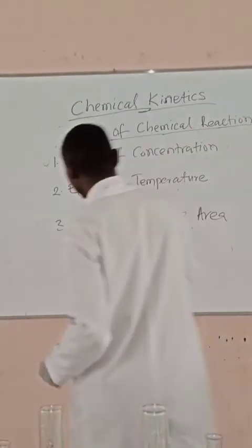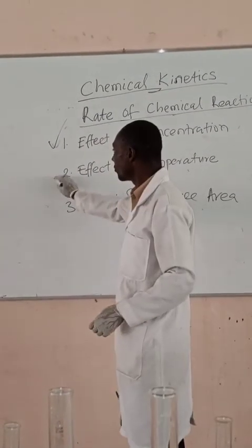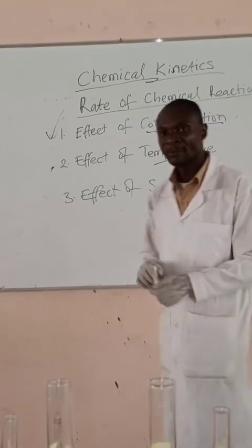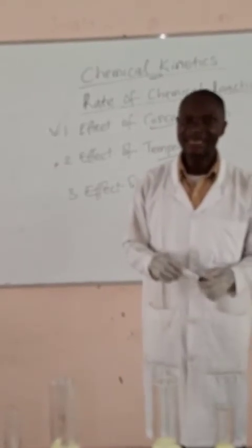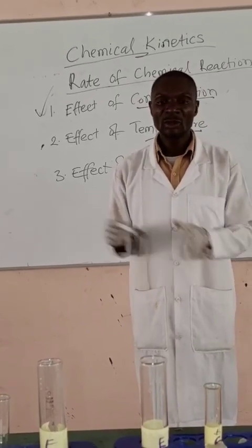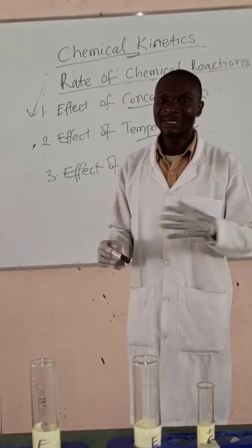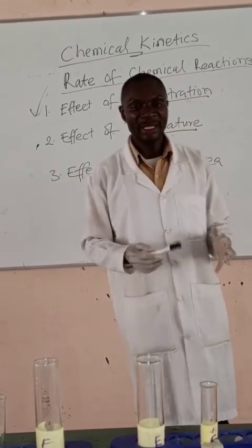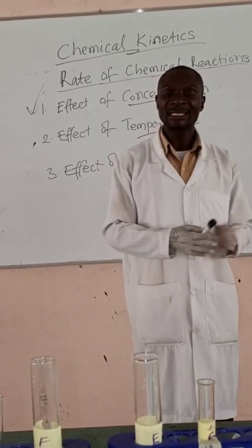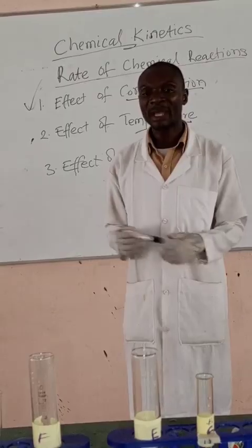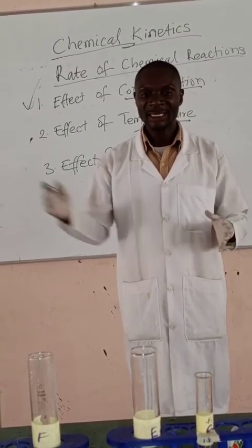We have been able to carry out the test for concentration. Now we can go on to the effect of temperature. For temperature, we need to go to the Bunsen burner and heat. We have two sets of solutions with the same concentration — one set at room temperature and the other set will be heated. We will then compare the rate of chemical reaction between the two sets, since the temperatures are varied.